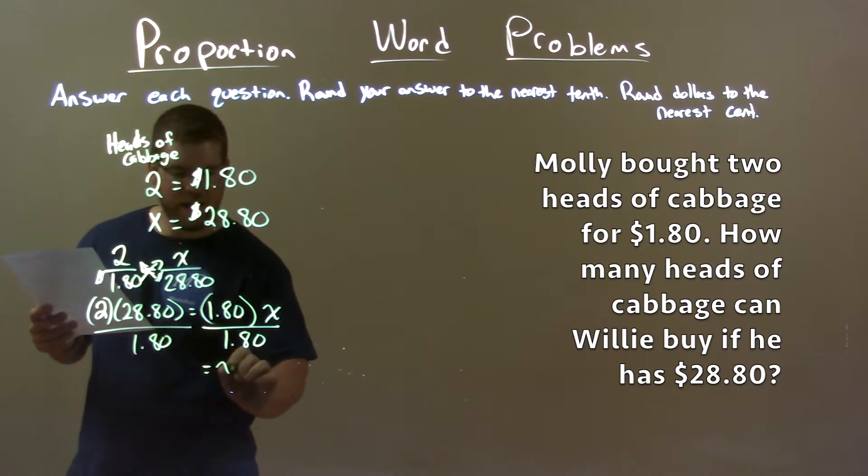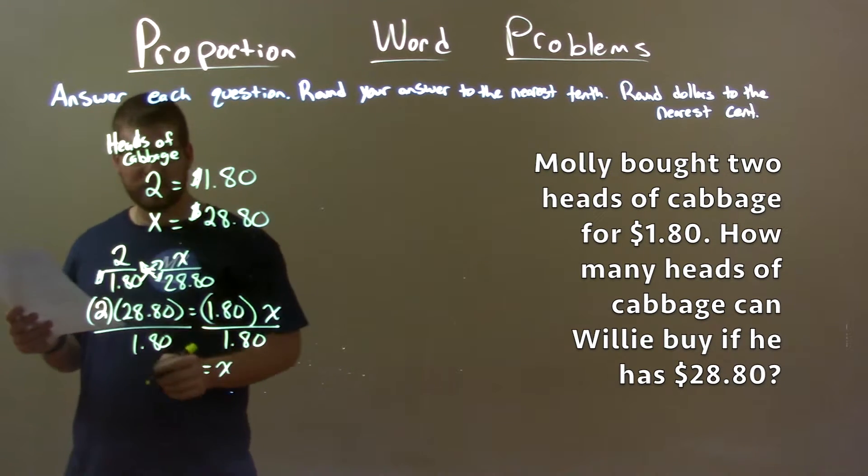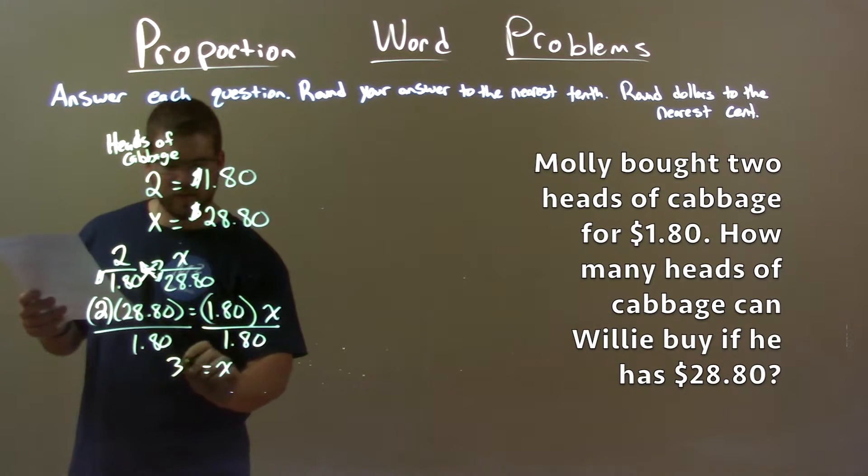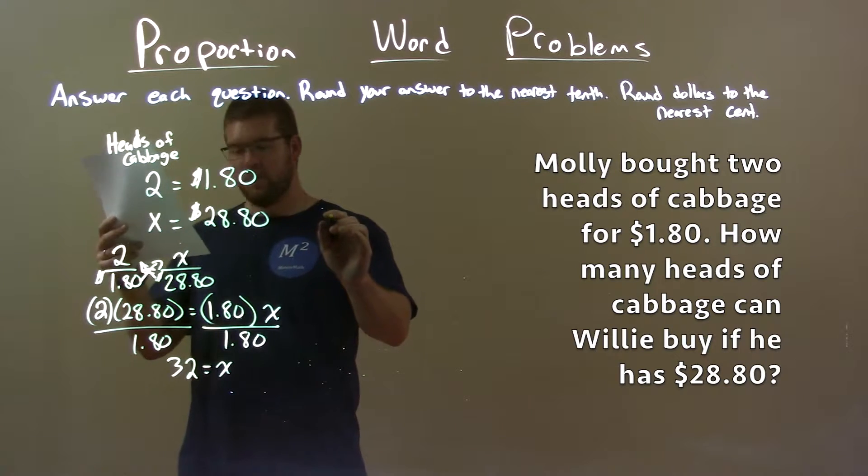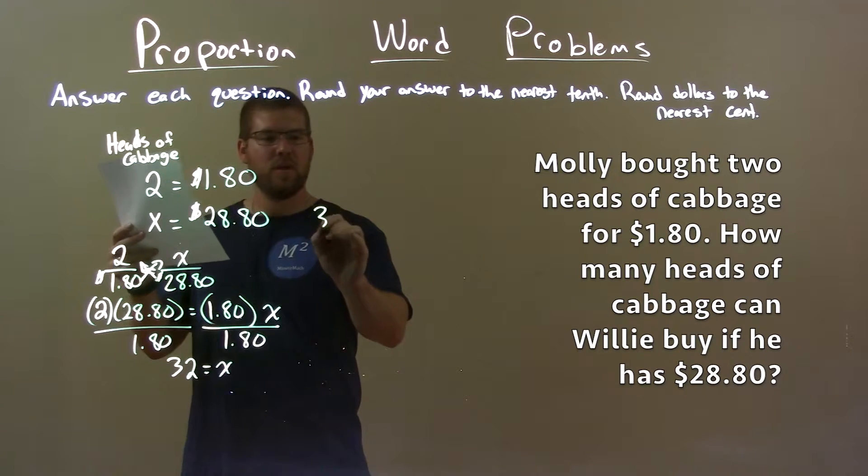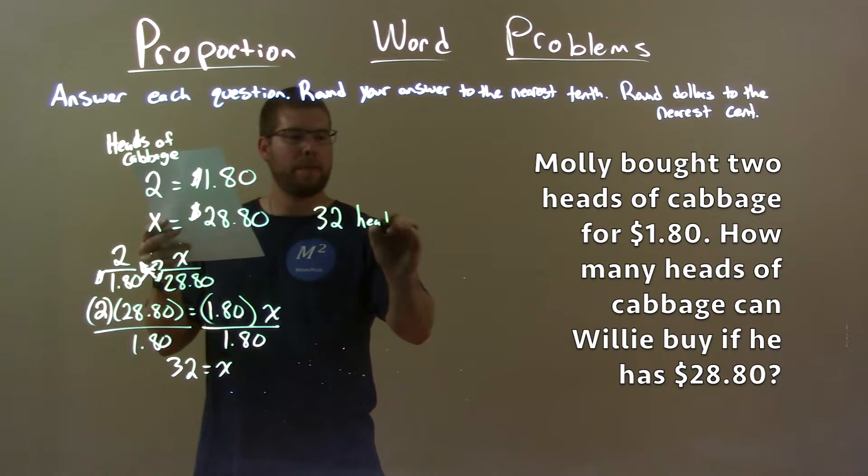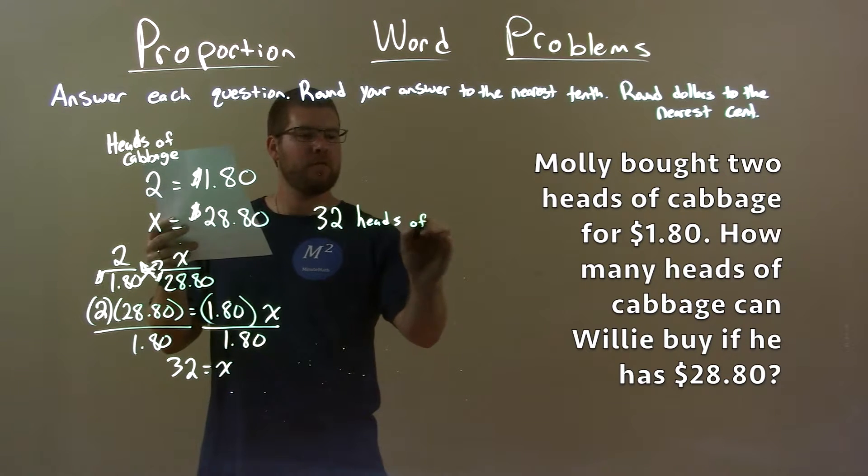And we have X equals - well, 2 times $28.80 divided by $1.80 is 32. So Willie can buy with $28.80, 32 heads of cabbage.